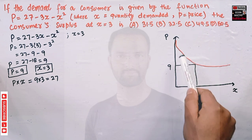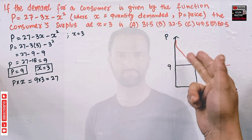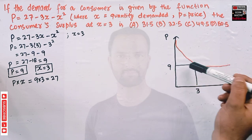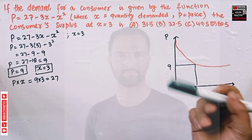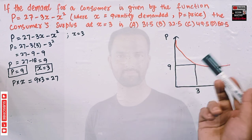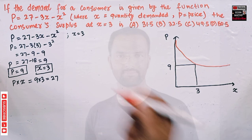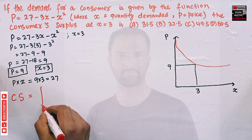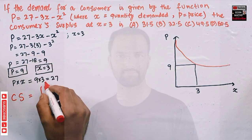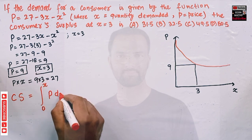Graphically, consumer surplus is the area that lies below the demand curve and above the equilibrium price — that triangle-like shape, although it is not actually a triangle. This area represents the consumer surplus. The formula for consumer surplus is the definite integral from 0 to the equilibrium quantity of the inverse demand function with respect to x.